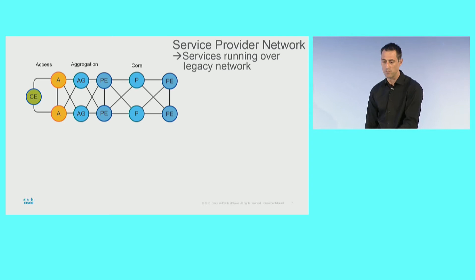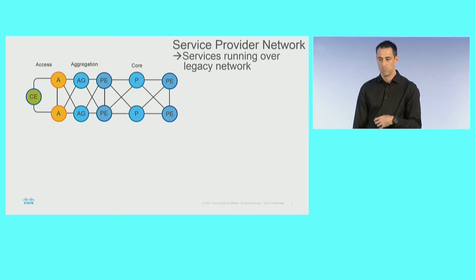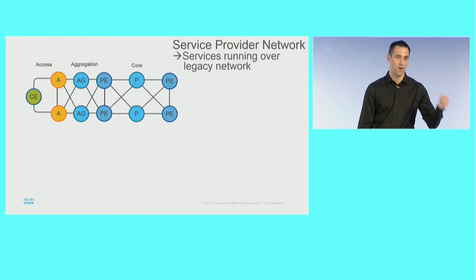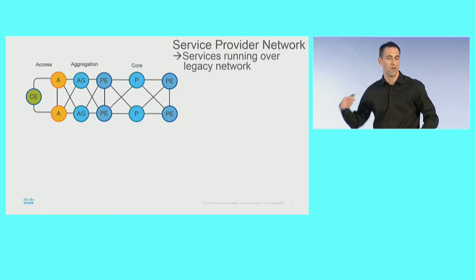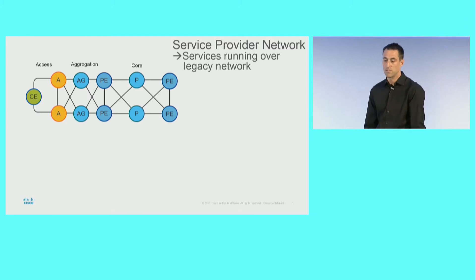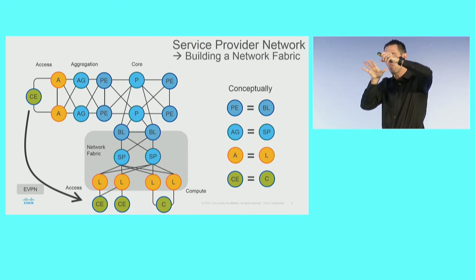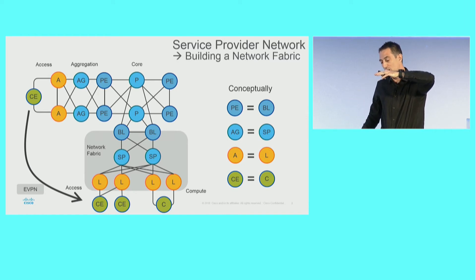Let's take one of those networks — people know this, you've been doing this forever. You have your core, legacy aggregation and access. You want to bring services. You don't want to take 18 months anymore. You want to spin a service very fast and move on, then spin another service very fast. You don't want to put big boxes, qualify each service, then bring everything up. It's too slow, too complex. So the answer is: build a network fabric. With a network fabric, you take your core and stretch it, pushing your L3 VPN service down very, very close to your application.